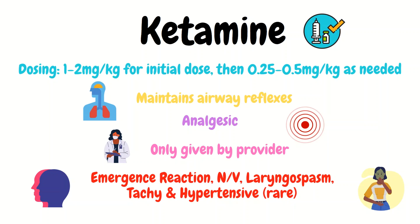Next is ketamine. Typical dosing is 1 to 2 milligrams per kilogram as an initial dose, then 0.25 to 0.5 milligrams per kilogram as needed. The key thing with ketamine is that the patient maintains their airway reflexes. Although this is true, if it's pushed too fast, the patient's respiratory status and airway can also become compromised — which is why you are carefully monitoring the patient. Never get complacent; even with ketamine, you want to continually monitor your patients.